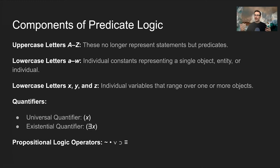To recap: uppercase letters A through Z represent predicates — claims that are true about certain objects. Lowercase letters A through W are individual constants that stand for a single object, entity, or individual. And lowercase letters X, Y, and Z are variables that can stand for or range over one or more objects. We'll look at some examples here in a minute to make this clear.